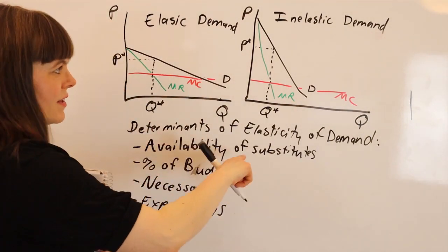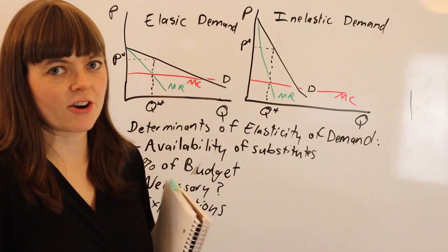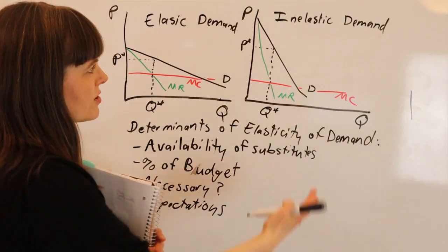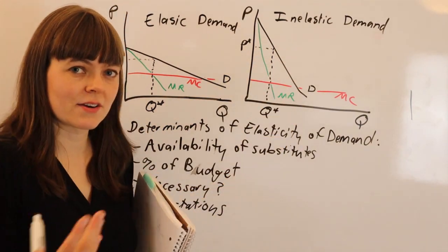And when we think about availability of substitutes, that includes competitors. How many competitors' products are out there? And the fewer competitors you have, of course, the more inelastic your demand curve is going to be.